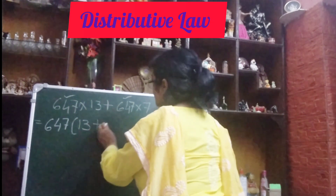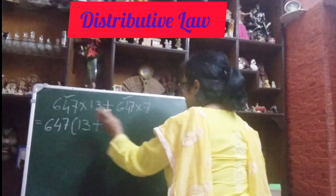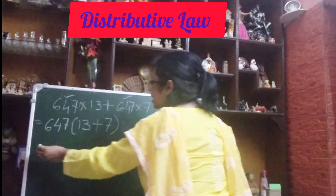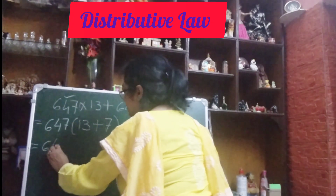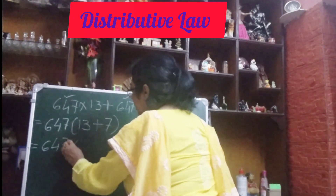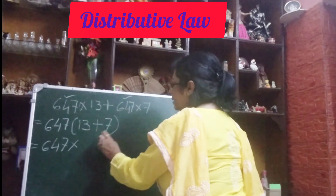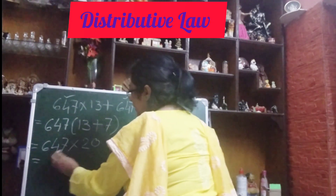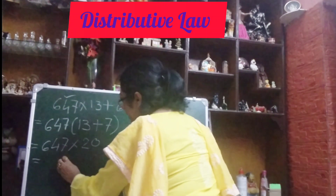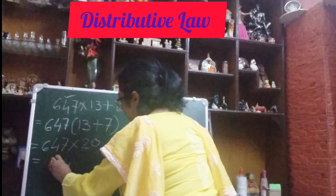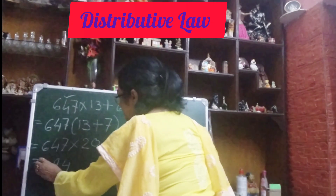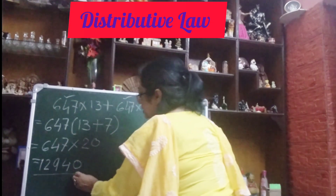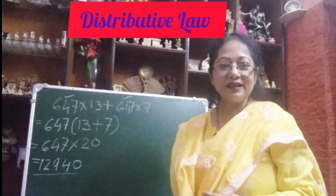We will write 13 here, plus — I have taken this one also — what is left, 7 is left. So I have written 7. Now we have 647 × (13 + 7), which is 647 × 20. Now we multiply: 7 × 0 is 0, carry; multiply step by step — and don't forget to write the zero. So this is our answer.